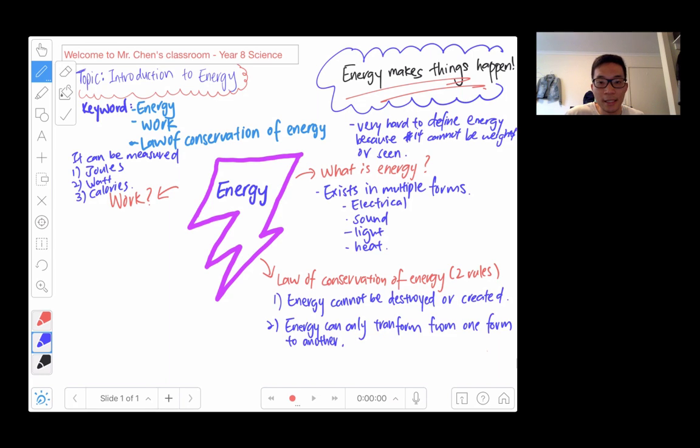This is the law of conservation of energy. There are two rules when you hear about energy, these are the two rules that you need to remember straight away. The first one is energy cannot be destroyed or created. You cannot destroy energy or create it. Rule number two: the reason why it cannot be created or destroyed is because energy can only transform from one form to the other.